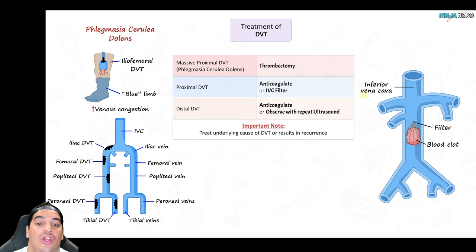Why are PEs so terrifying? First, respiratory failure: blocked blood flow from the pulmonary artery to the lungs impairs gas exchange, causing poor perfusion with normal or increased ventilation — a V/Q mismatch — leading to hypoxemia. As a result, the patient develops tachycardia. Classic findings are dyspnea, hypoxemia, tachycardia, and tachypnea. If a patient presents with these findings plus a recent DVT diagnosis, you should strongly suspect a pulmonary embolism causing respiratory failure.